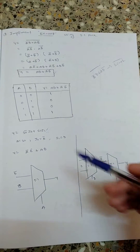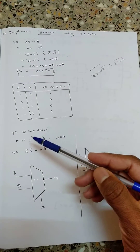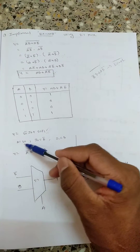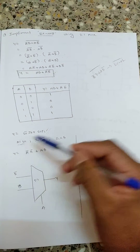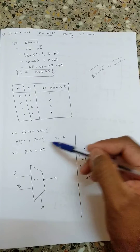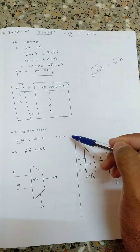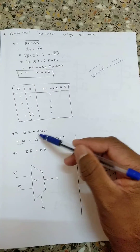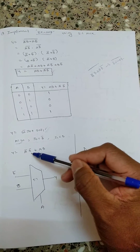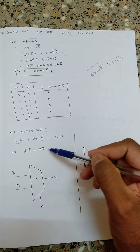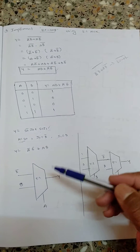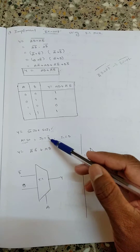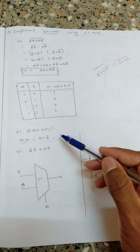I will select A as the select line. Then I put I_0 = B_bar and I_1 = B. Substituting these three values in the MUX equation gives A_bar·B_bar + A·B directly, which is the XNOR equation.